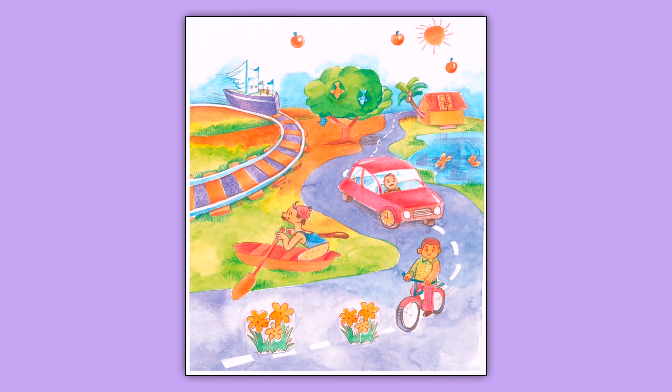Another funny thing is a coconut tree growing inside the house. जैसे कि आप लोग जानते हैं, coconut tree बहुत ही tall होता है, वो घर में नहीं उग सकता है। Coconut tree के लिए open space की जरूरत पड़ती है — यह एक big, huge, tall tree होता है जो open space में grow करता है। इस funny picture में घर के अंदर से coconut tree grow हुआ है। So this is the fourth funny thing we can see in this picture.